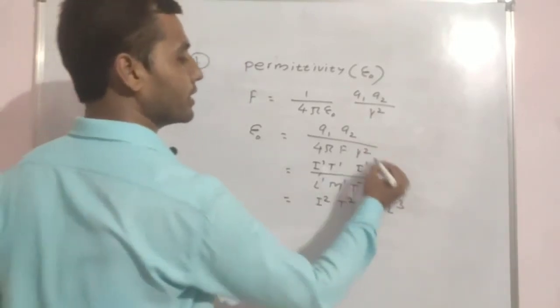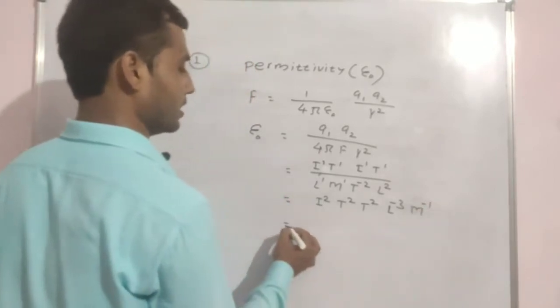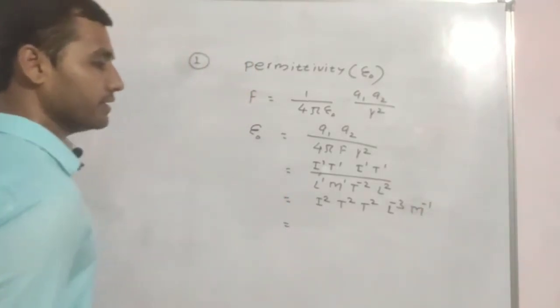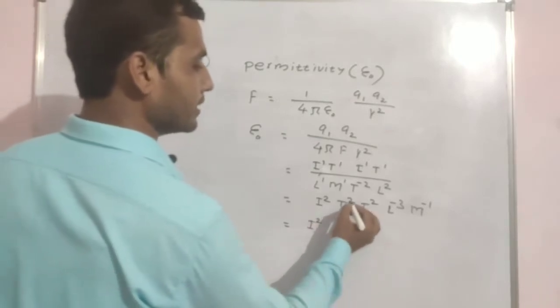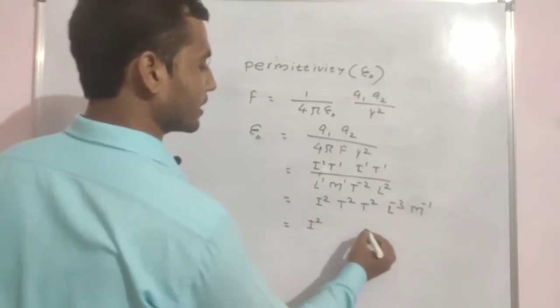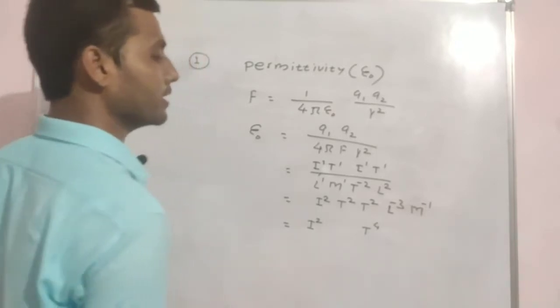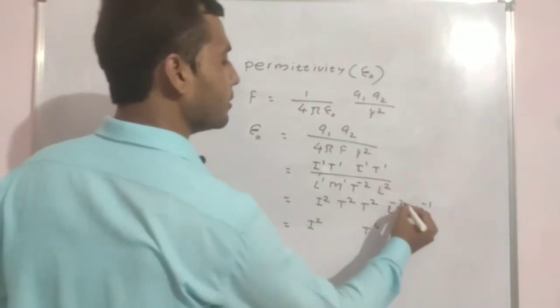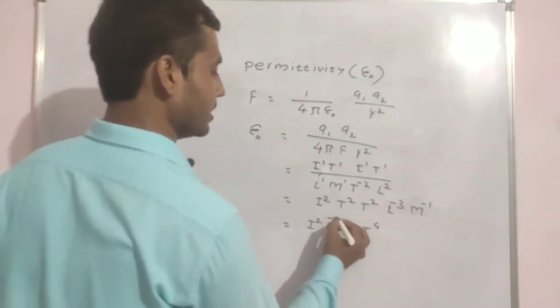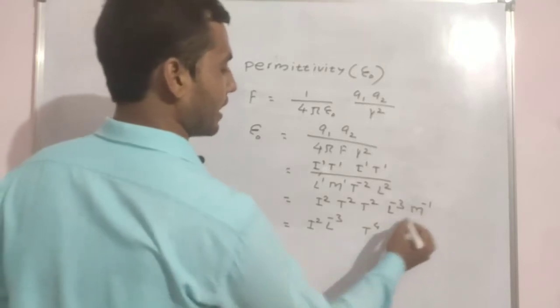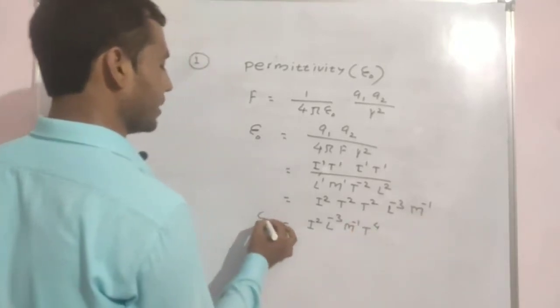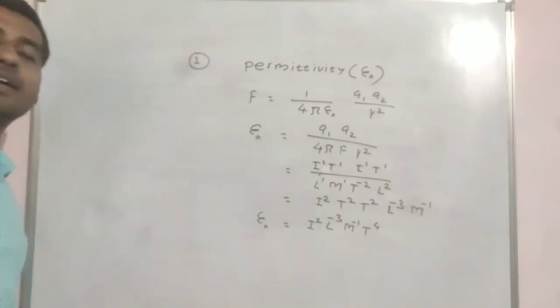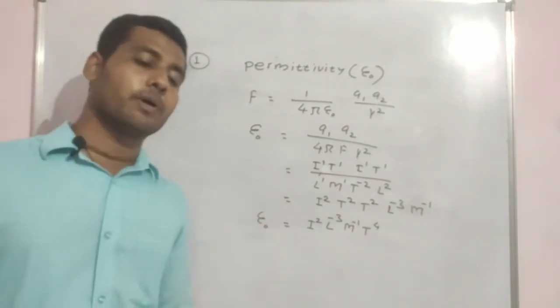This m1, going up becomes m minus 1. So from this we can write i to the power 2, t2 t2 becomes t4, and this l minus 3, and this is m minus 1. So this is the dimension for epsilon 0, that is permittivity.